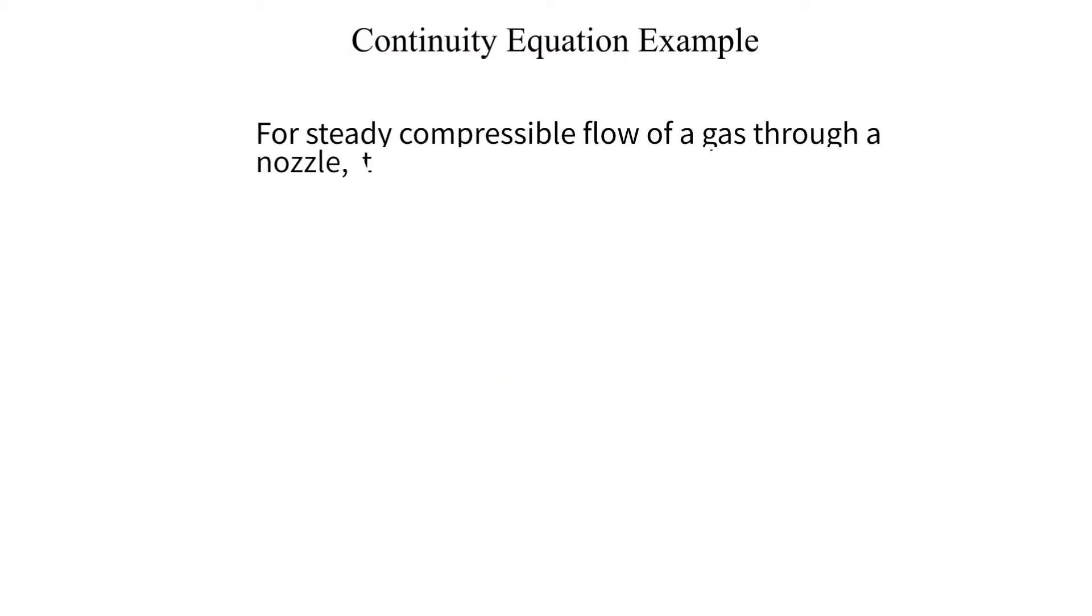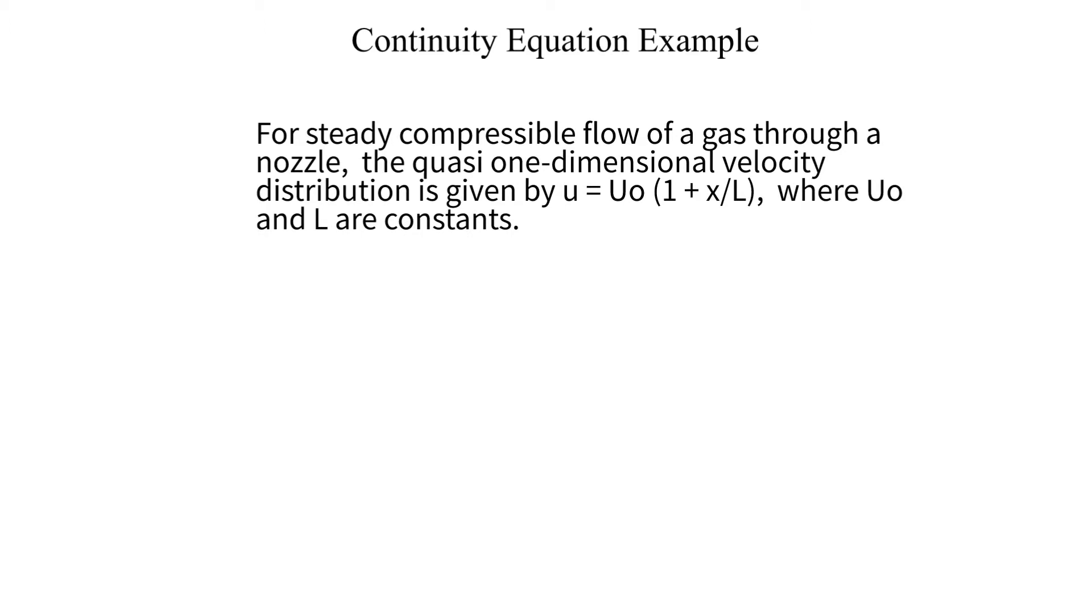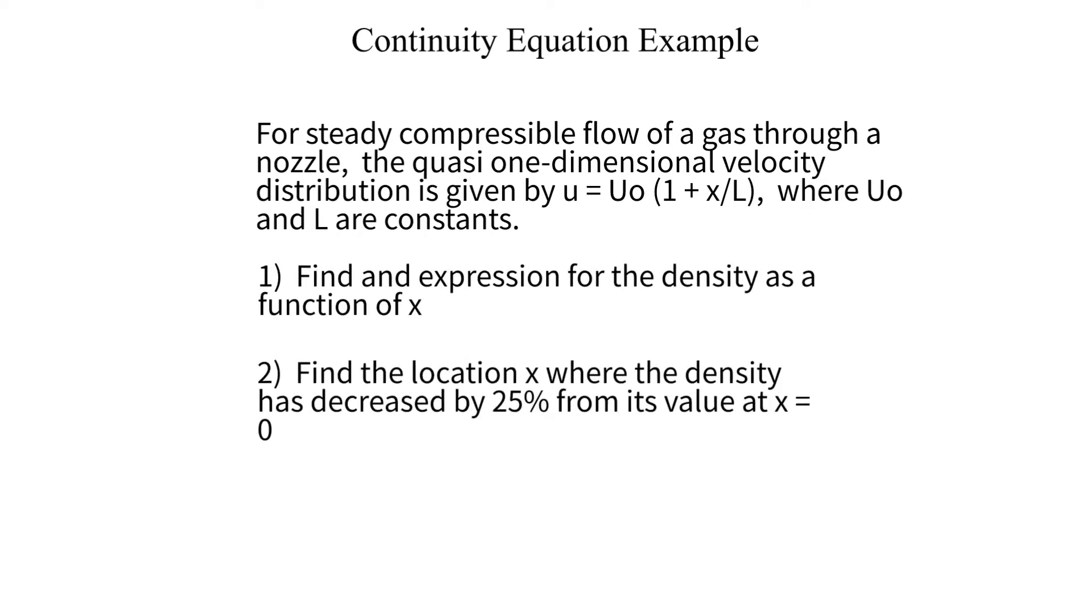Here is the problem statement. The flow through the nozzle is treated as quasi one-dimensional. Our goal is to determine an expression for density as a function of x and to find a location where the density has decreased by 25 percent from its initial value. The velocity as a function of x is provided along with the density at the inlet of the nozzle.